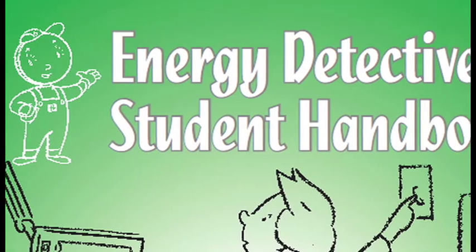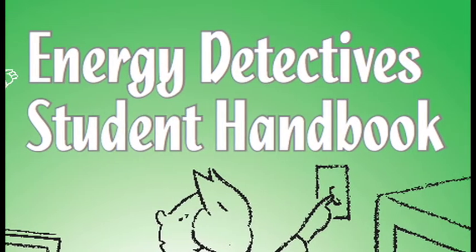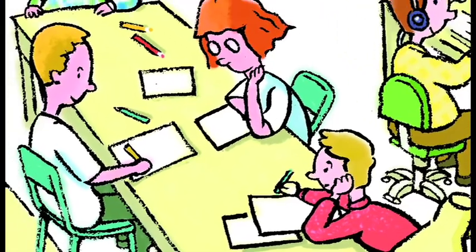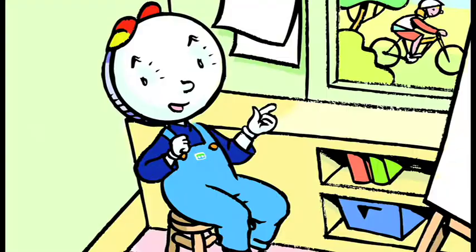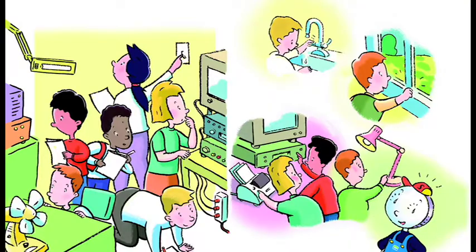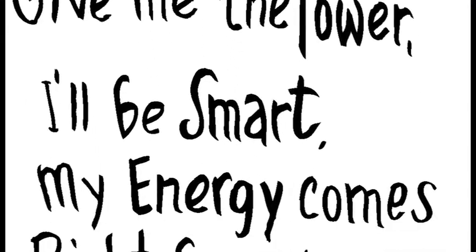Each student receives a student handbook. The 20 page handbook allows students to complete activities for each of the lessons as the unit progresses. It is designed also as a take home piece for students once the unit is completed. Activities in this handbook range from a safety crossword as well as writing a letter to Smarty.